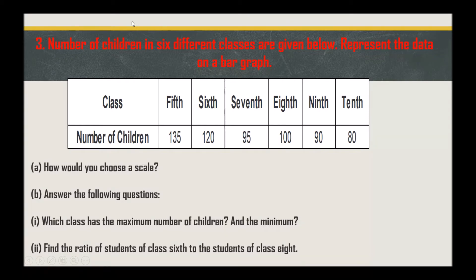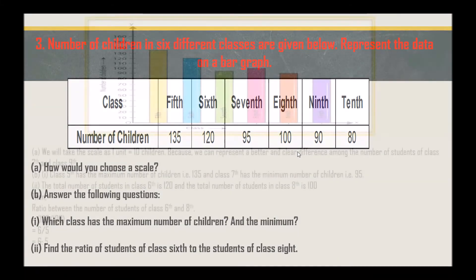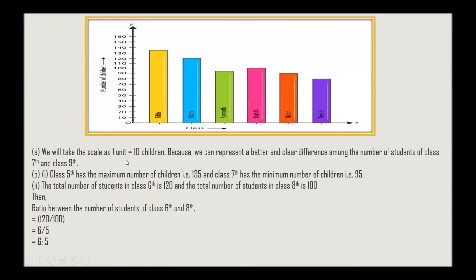The first question is: how will you choose a scale? We will take the scale as one unit equals 10 children, because this gives a better and clearer difference among the number of students. Class 5 has the maximum number of children, which is 135, and class 7 has the minimum number of children, which is 95. The total number of students in class 6 is 120 and in class 8 is 100, giving a ratio of 6 to 5.